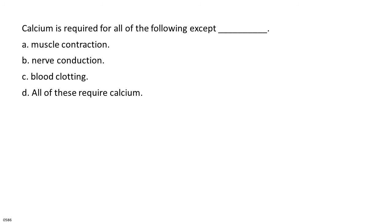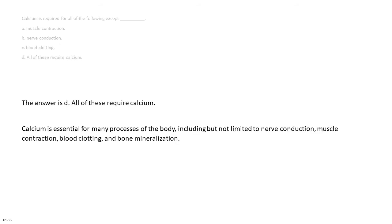Calcium is required for all of the following except: A. Muscle contraction. B. Nerve conduction. C. Blood clotting. D. All of these require calcium. Calcium is essential for many processes of the body, including but not limited to nerve conduction, muscle contraction, blood clotting, and bone mineralization.